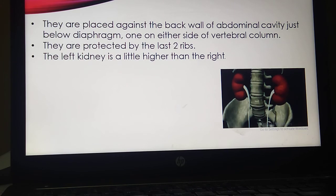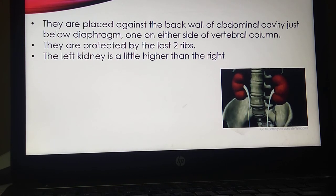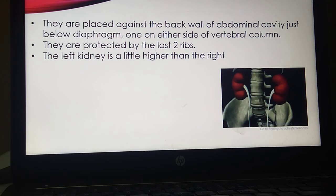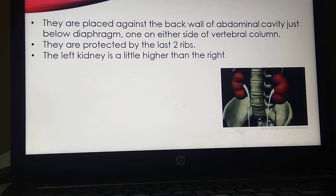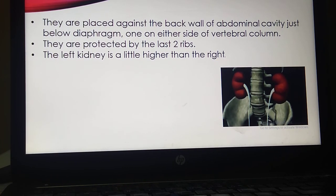They are placed against the back wall of abdominal cavity just below diaphragm, one on either side of vertebral column. They are protected by the last two ribs. The left kidney is lighter and little higher than the right.